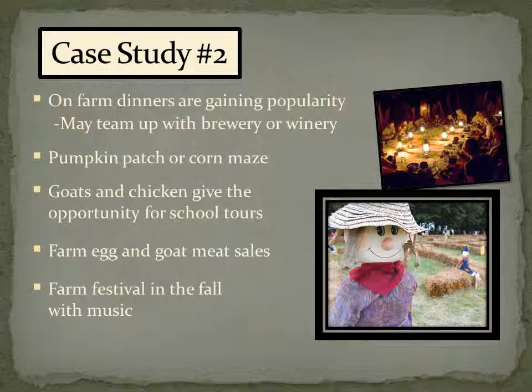Solutions for Case Study Two: one option is an on-farm dinner — this is becoming a very successful venture. Maybe team up with a local brewery or winery to pair food and drinks together. The classic pumpkin patch and corn maze, school tours — as more children get further from the farm, schools are willing to pay a few dollars per person for students to come out. Also, selling eggs and goat meat is an area with growing demand. Maybe a fall festival — get a bluegrass band, highlight fall decorations, have a scarecrow contest. Lots of opportunity for Case Study Two.